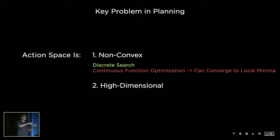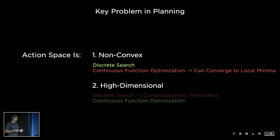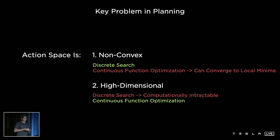There can be pockets of local minima that the planner can get stuck into. And secondly, the high dimensionality comes because the car needs to plan for the next 10 to 15 seconds. It needs to produce the position, velocities, and acceleration over that entire window. This is a lot of parameters to produce at runtime.